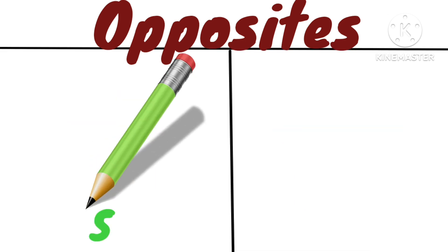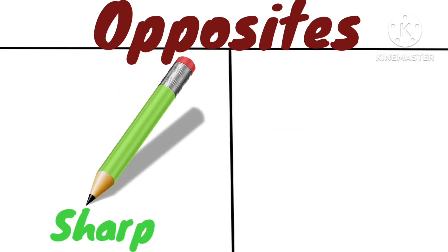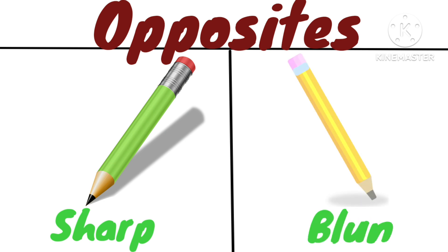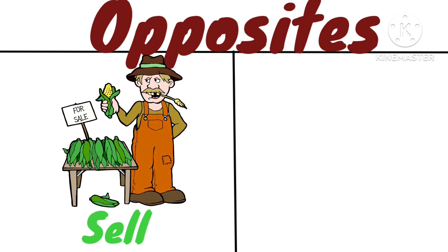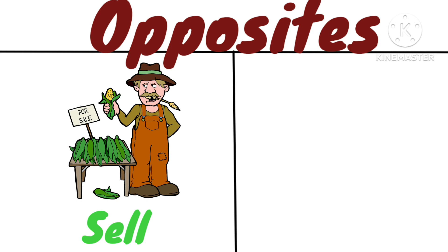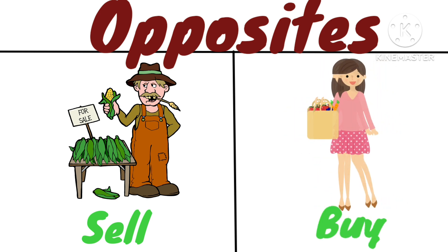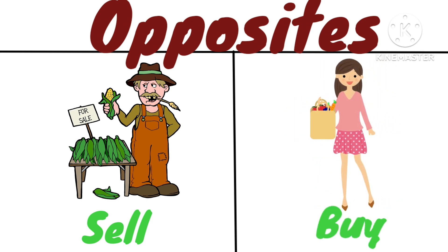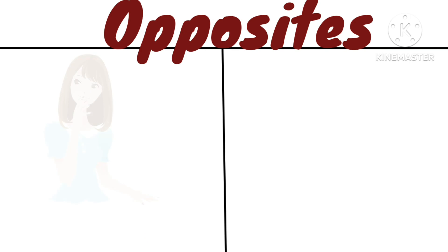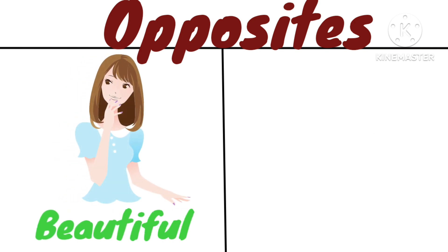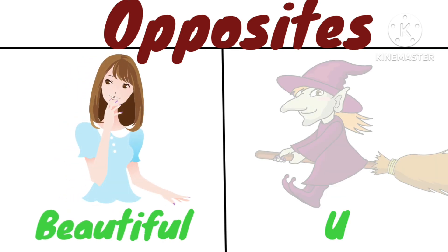Opposite of sharp is blunt — sharp pencil, blunt pencil. Opposite of sell is buy — the man is selling, and the woman is buying.